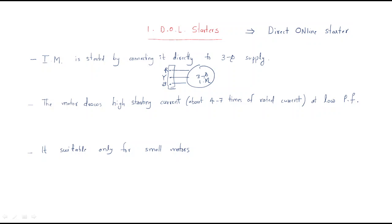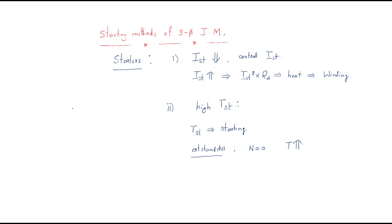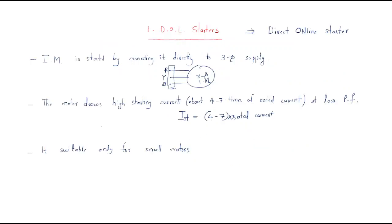The motor draws a high starting current — about four to seven times the rated current — at low power factor. Without any control, the starting current is very high. We already discussed the two requirements: controlling starting current and improving starting torque.